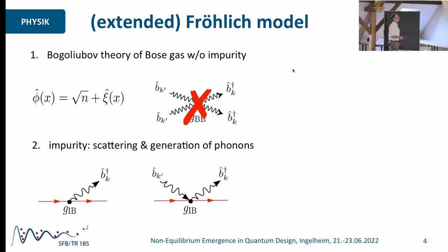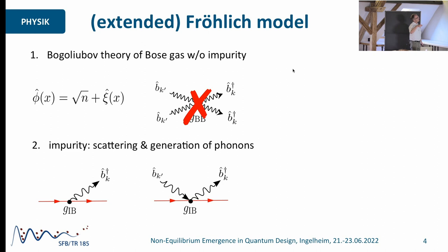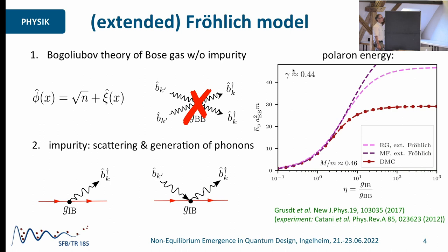Then in the second step, you add the impurity, and the impurity interacts essentially with the phonons. It can either scatter a phonon out of the condensate, or it can mediate phonon scattering, or it can create or annihilate pairs of phonons. If you do this, you end up in a model which you know very well from condensed matter physics, called the Fröhlich model. To be more precise, these additional terms are added — it's sort of an extended Fröhlich model — and that's the standard way people describe the interaction of an impurity in a Bose gas, i.e., the Bose-Polaron problem.